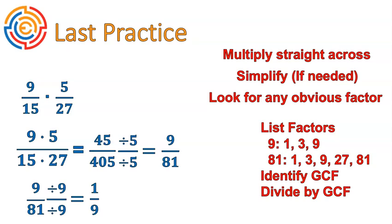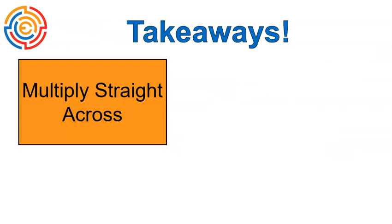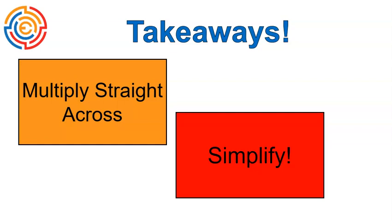This could look different for you. You might have identified something different. Maybe you listed all the factors of 45 and 405. That's up to you. But this was a quick trick to help make it a little bit quicker for you. A couple of takeaways. Multiplying fractions is multiplying straight across. Make sure you always simplify your fractions. Fractions need to be in simplest form. I hope that video was helpful for you. Have a wonderful day.